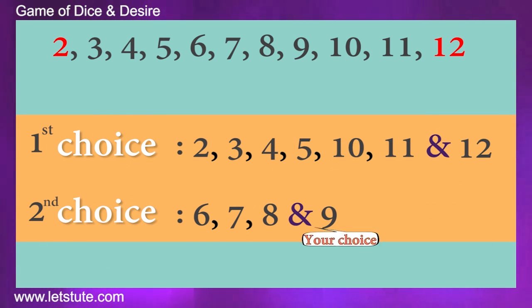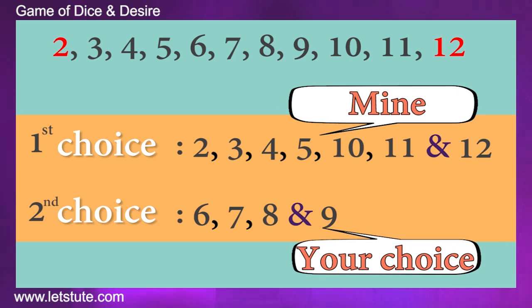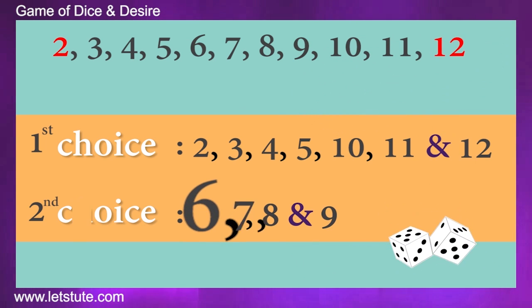For example, if you choose set 2 and I choose set 1, then upon rolling the dice if the addition comes between any of these 4 numbers, 6, 7, 8 or 9, you will get a chocolate.